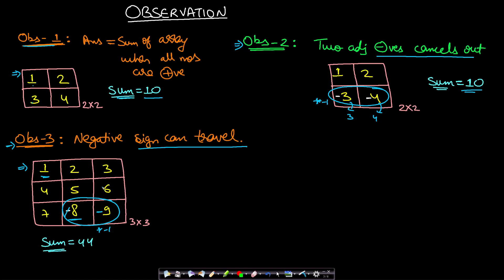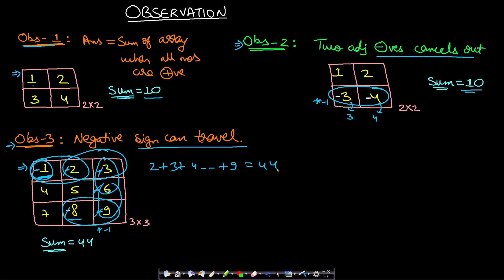To move the negative to 1: multiply -9 and 6 by minus 1 — negative transfers to 6, making it -6. Multiply -6 and 3 by minus 1 — negative transfers to 3, making it -3. Then take 2 and -3, multiply by minus 1 — you get -2. Take 1 and -2, multiply by minus 1 — you get -1. The sum is then all values except -1, so the sum from 2 to 9 is 44 minus 1 = 43.